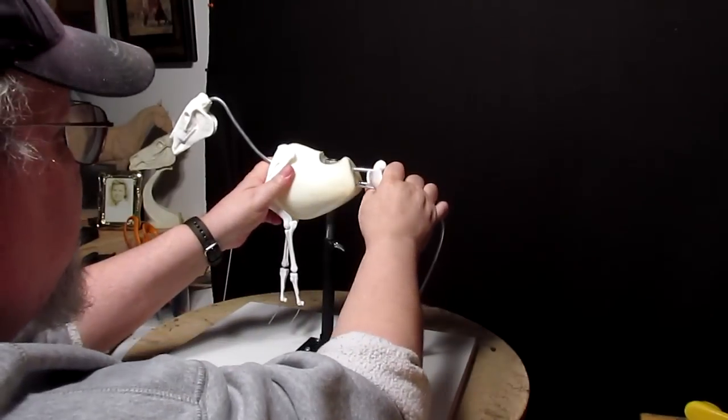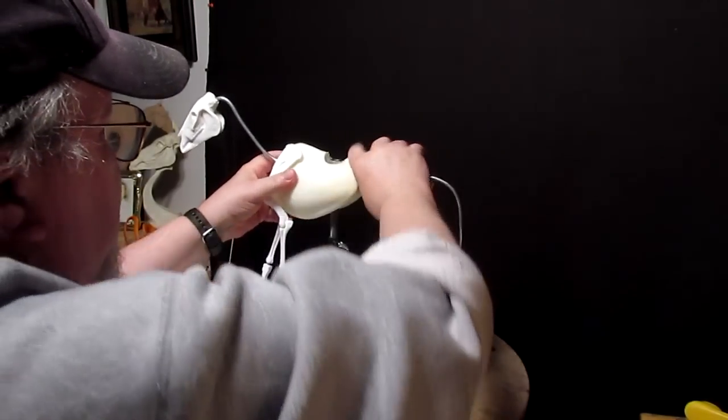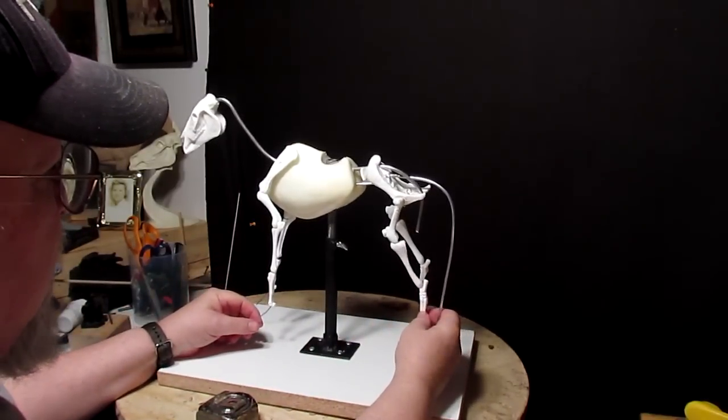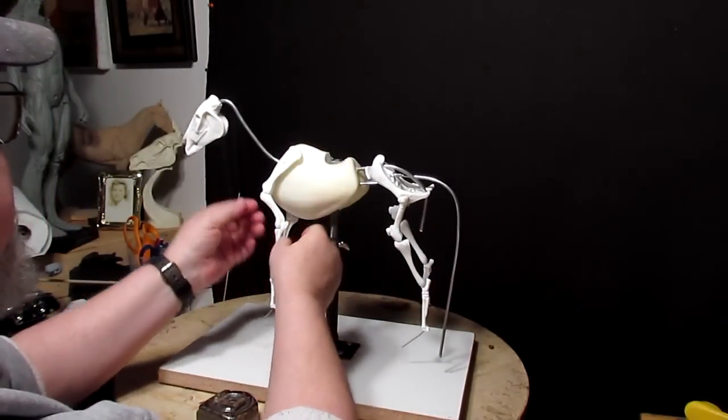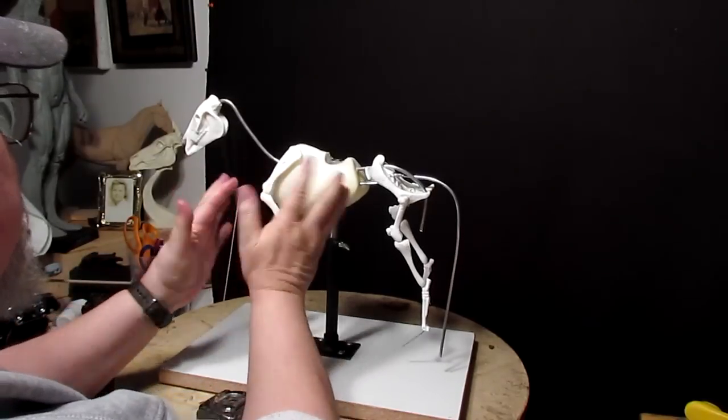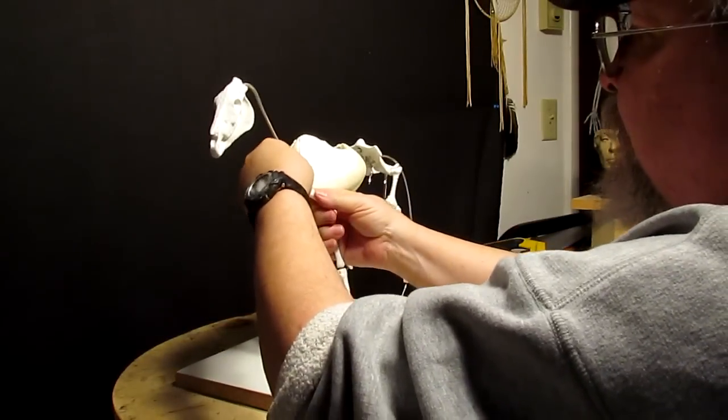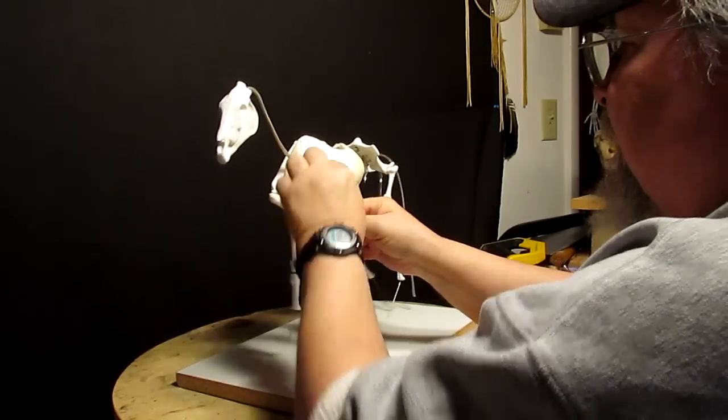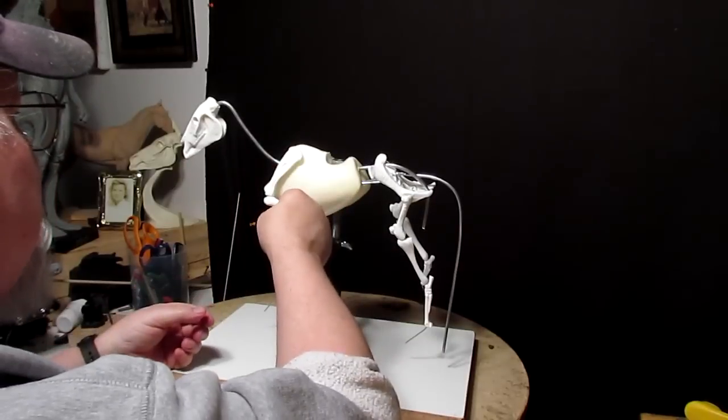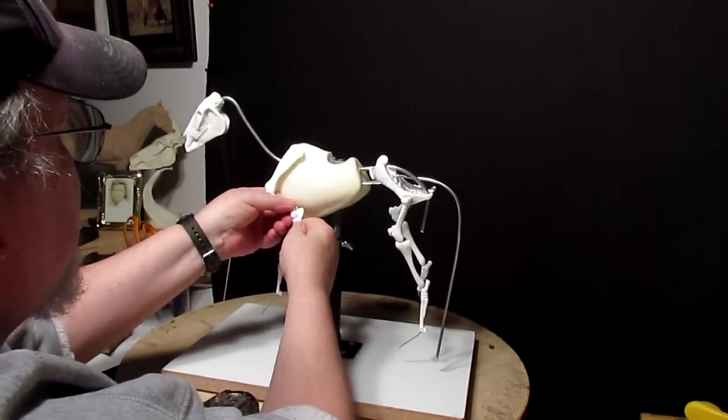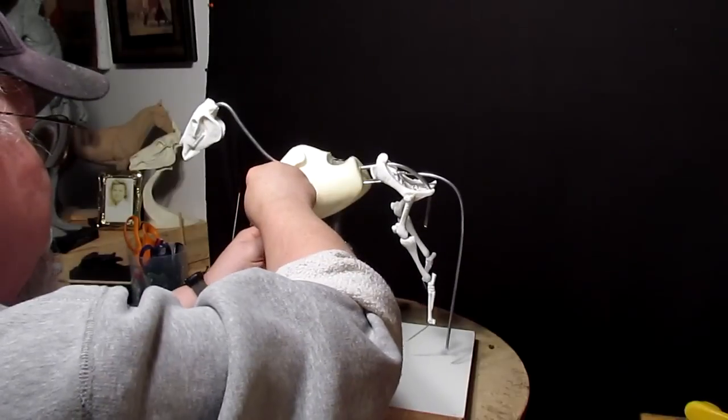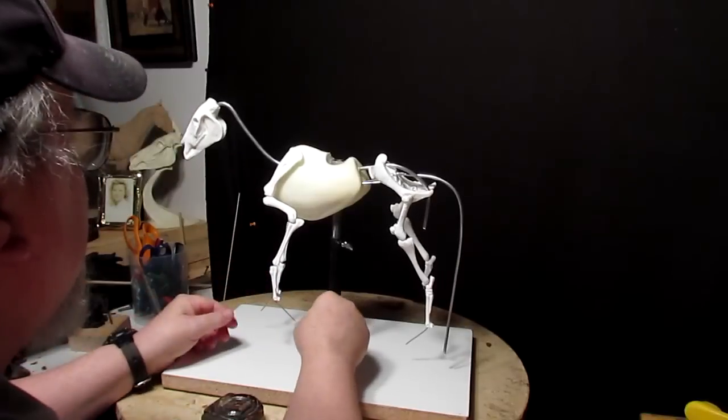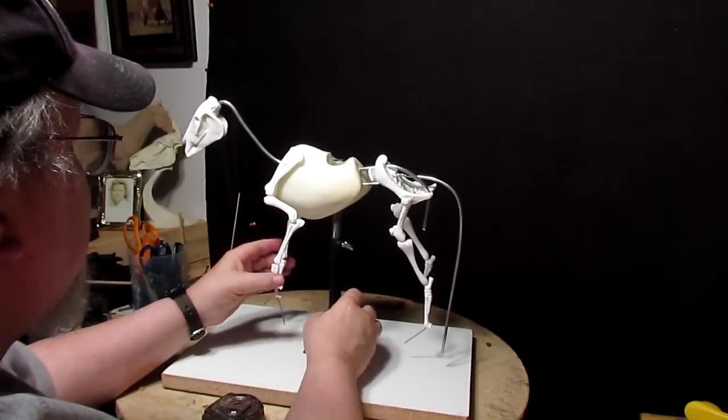You can tighten it real tight. You can do different configurations to the body if you're doing a horse that's in a bucking position or something like that. You can adjust the angles of the bones. Like with all True Form armatures, you always grab near the joint and bend. You'd never grab down here and bend up because you might break it right there because the legs don't have wire going through them.